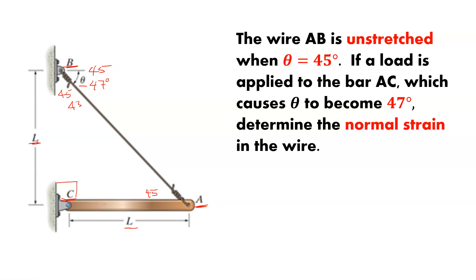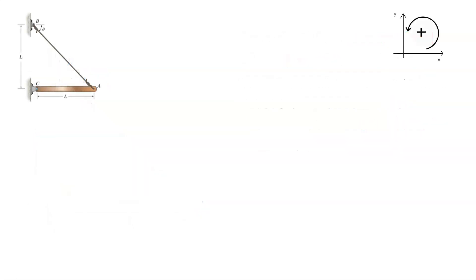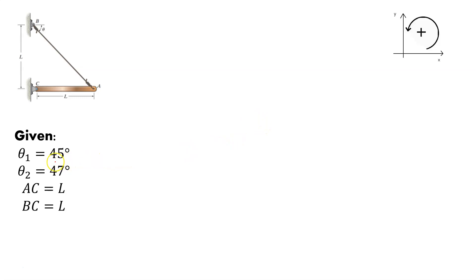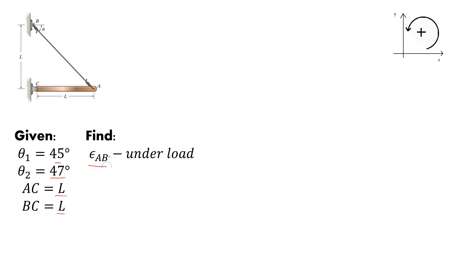Let's set this problem up. Our givens: the initial theta is 45 degrees, the secondary theta when loaded is 47 degrees, and AC and BC are both the same length L. What we're trying to find is the normal strain epsilon of AB — how much the wire actually stretches when under load. We've got a loaded condition and an unloaded condition, and a few things change between them.